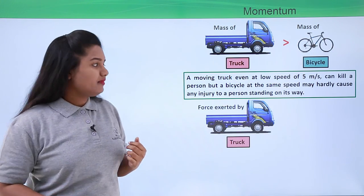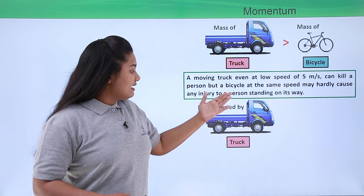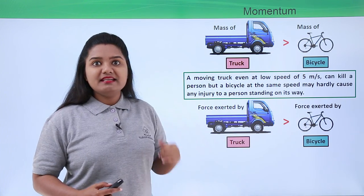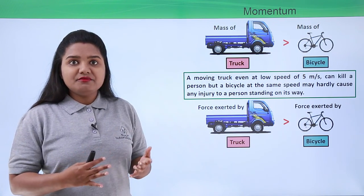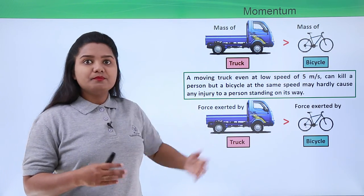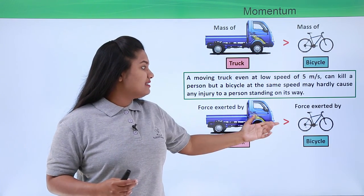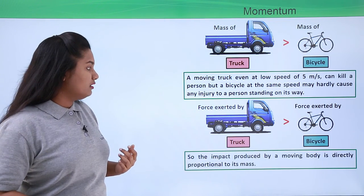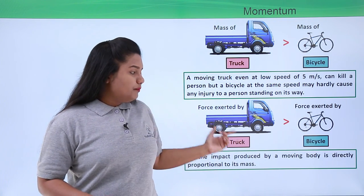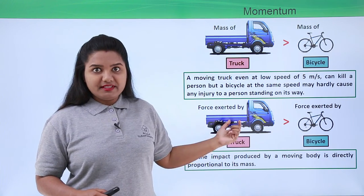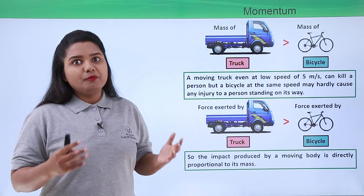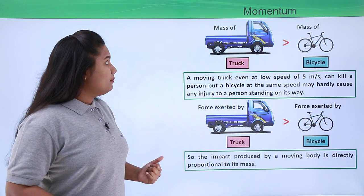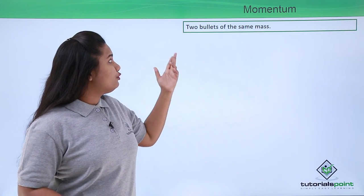The force exerted by the truck is much greater compared to the force exerted by the bicycle traveling at the same speed. The conclusion we draw is that the impact a moving body produces is directly proportional to its mass.